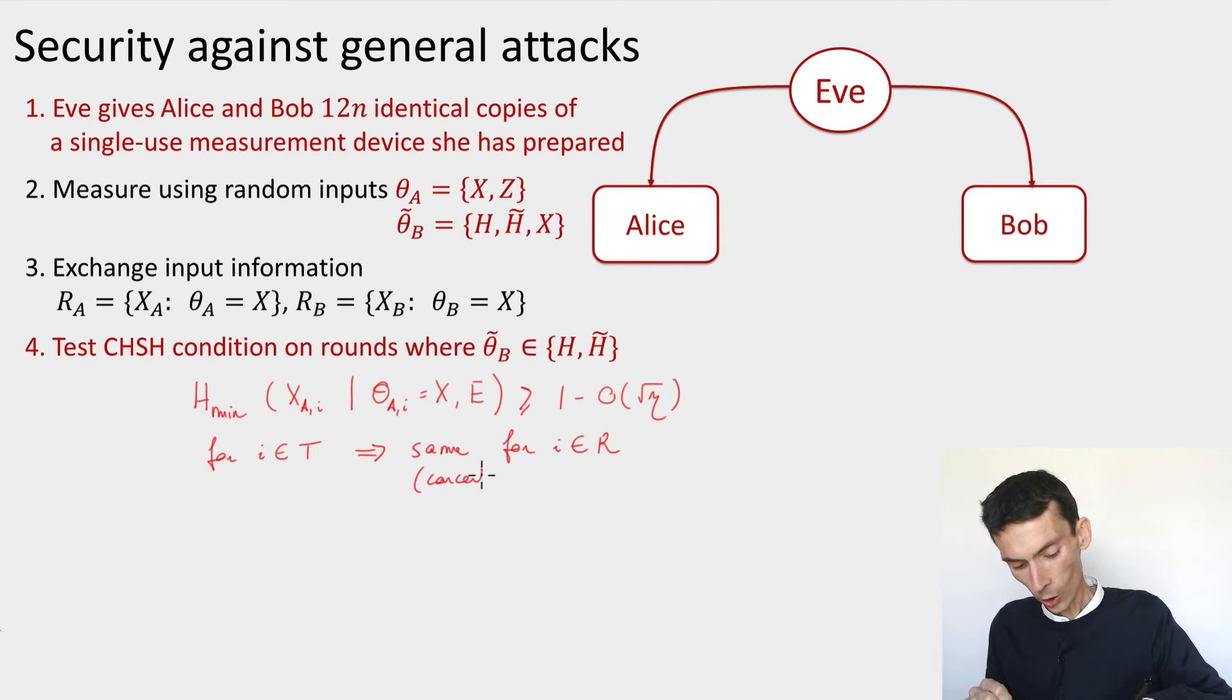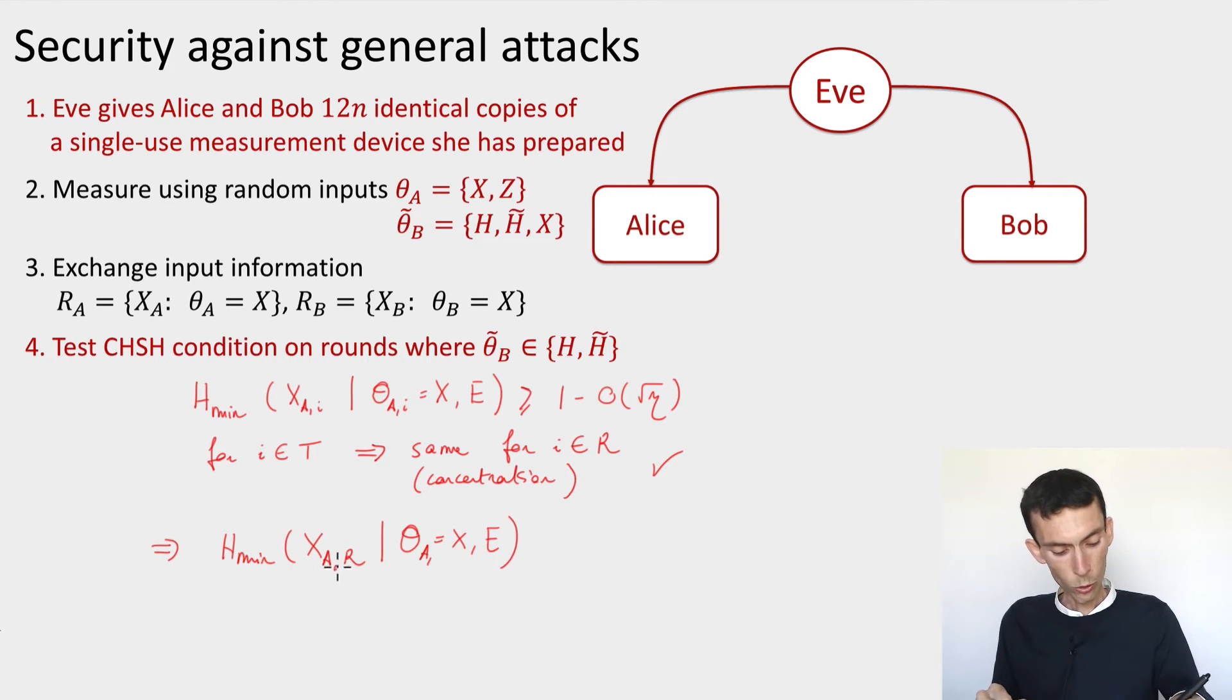This step is not really much harder in the case of coherent attacks than in the case of collective attacks, so that's okay. The second step is the harder one. The second step used additivity of the min-entropy on tensor product states. And so now what we need is that from this single round condition, we'd like to be able to conclude that we can put all the rounds together.